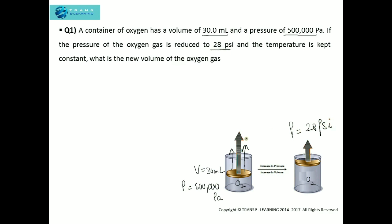PSI stands for pounds per square inch, which is a common unit of pressure. Here the initial pressure is given in Pascal and the decreased pressure is 28 PSI. The temperature is kept constant, and we have to find the new volume of the oxygen gas corresponding to this new pressure.